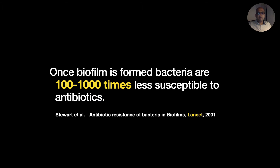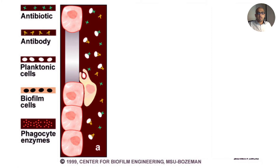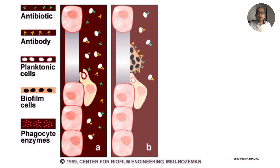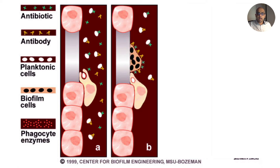Once biofilm is formed, bacteria are a thousand times less susceptible to antibiotics. When there is no biofilm, free bacteria can be attacked by antibiotics, antibodies, and phagocytes. But when a biofilm is formed, antibiotics and antibodies cannot diffuse into the biofilm, and bacteria can exchange genes with each other responsible for development of antibiotic resistance. In addition, bacteria are now in a reduced metabolic stage and are less susceptible to antibiotics, as antibiotics can effectively target bacterial functions only if bacteria are rapidly multiplying.